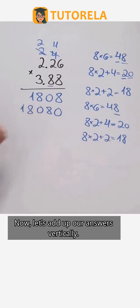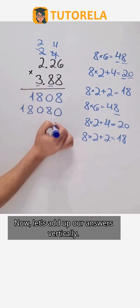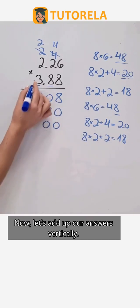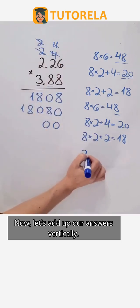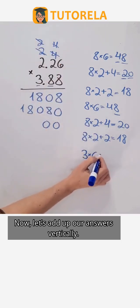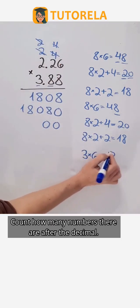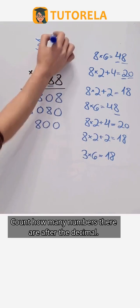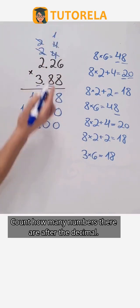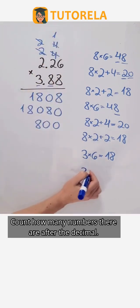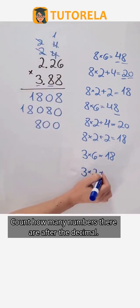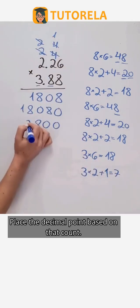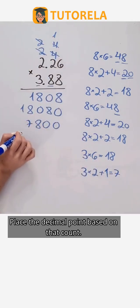Now let's add up our answers vertically. Count how many numbers there are after the decimal. Place the decimal point based on that count.